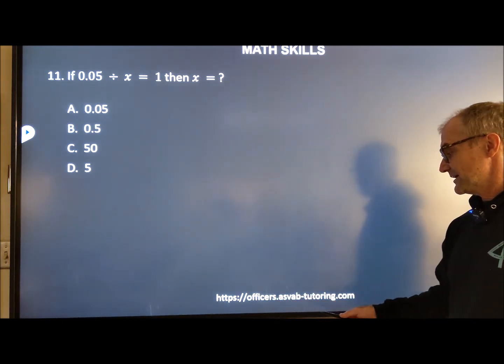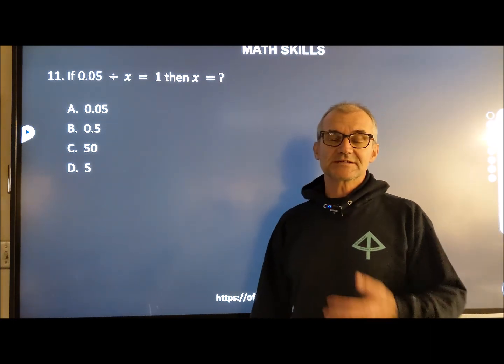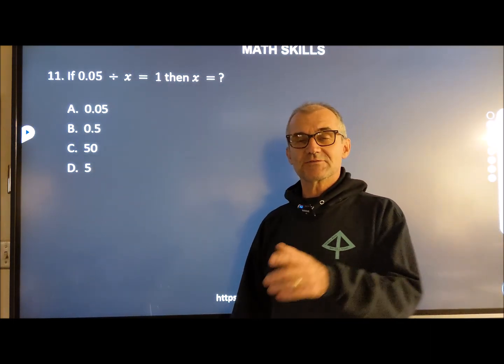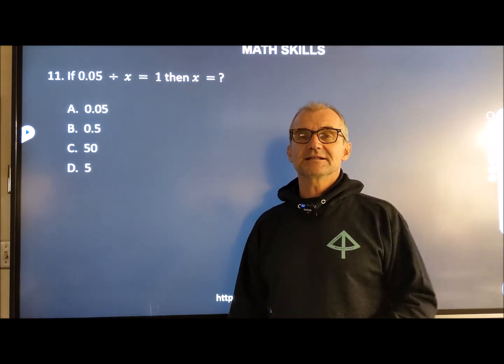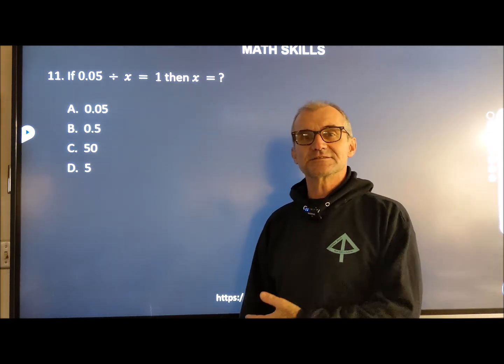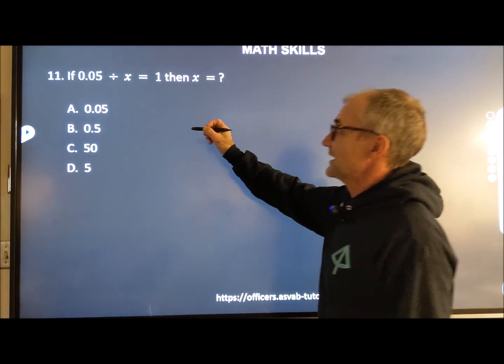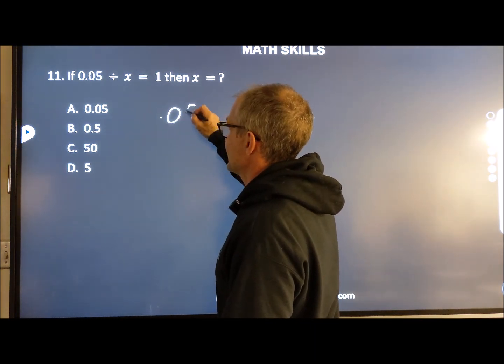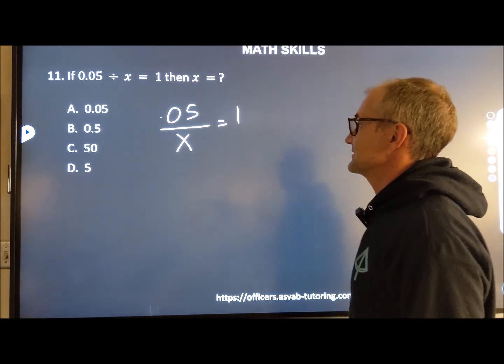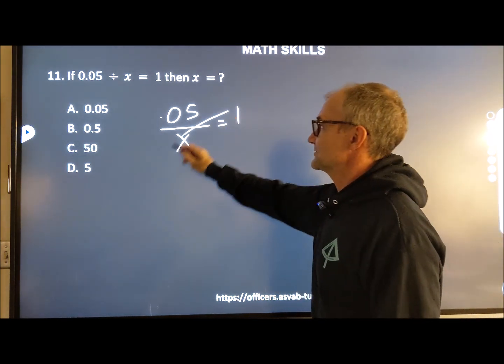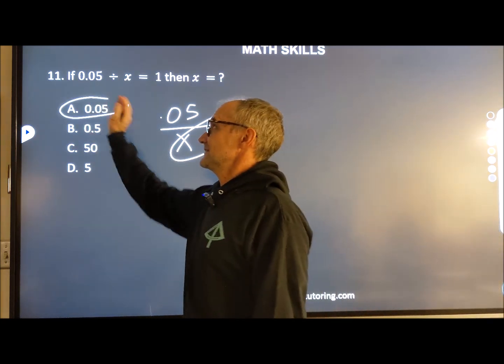You can also go to this web page right here, an ASVAB tutoring app that you can download on your phone to get more practice. All right, if you haven't watched the first 10 problems, I'll put a link in the description right here, and then maybe watch those 10, and then these are the next 10. So let's go ahead and get started. Number 11, if 0.05 divided by x equals 1, then what is x equal to? Well, I could just cross-multiply and see that x is equal to 0.05. That easy right there.